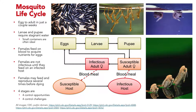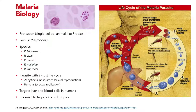Only the female mosquitoes bite — females require blood to provide nutrients for egg production. These adult mosquitoes are initially susceptible, but if a female encounters an infectious host she will become infectious herself. On her next blood meal she may pass that pathogen to a new host, and this cycle can repeat every couple of weeks.